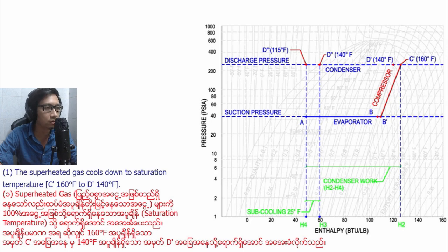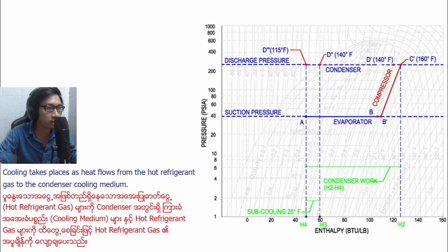Number one: the superheated gas cools down to saturation temperature C1 160 degrees Fahrenheit to D1 140 degrees Fahrenheit. Cooling takes place as heat flows from the hot refrigerant gas to the condenser cooling medium.